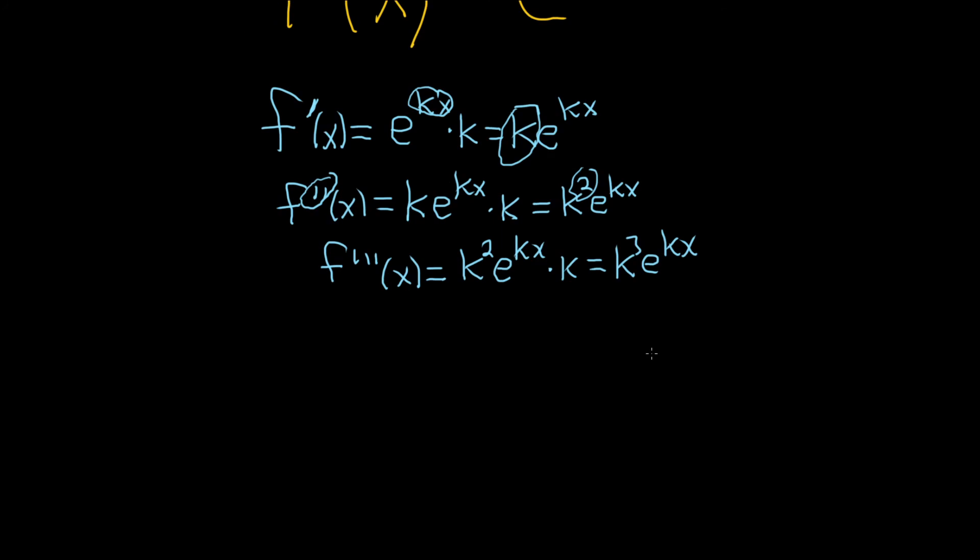And so now we have a formula, which we can guess will be: the nth derivative of our function is going to be k to the n times e to the kx. And that would be the formula for the nth derivative. You could prove this, by the way, using the principle of mathematical induction. But in this problem, they just wanted us to come up with a formula. They didn't say prove it or anything. So I hope this video has been helpful. Good luck.